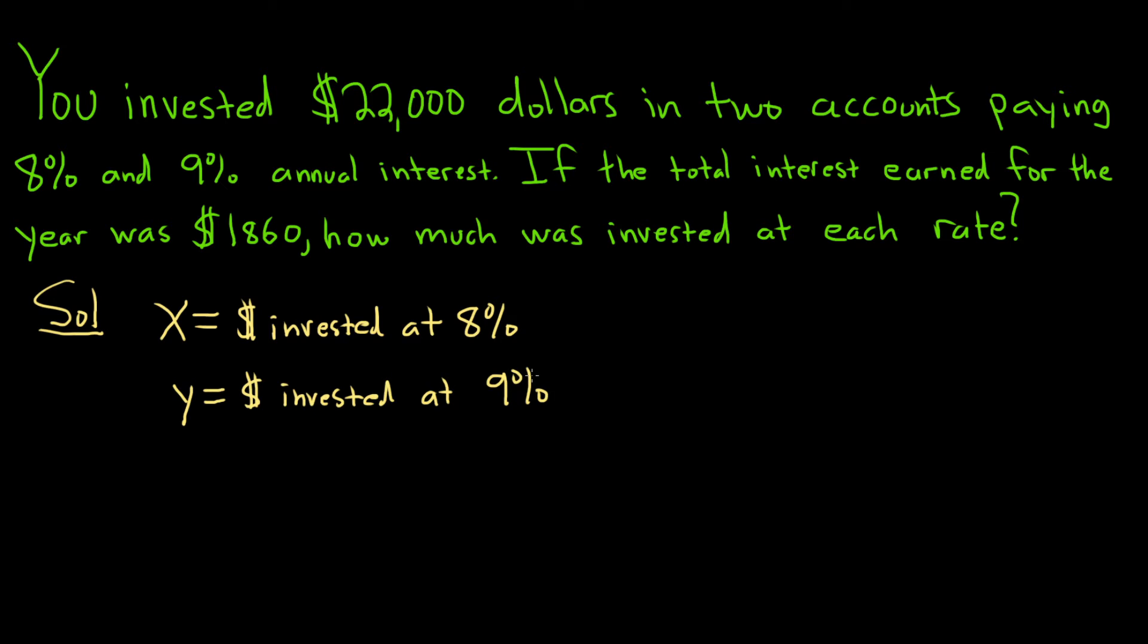Now we can create some equations with the given information. We invested $22,000 in two accounts. So that means the money invested at 8% plus the money invested at 9% equals $22,000. So we know that X plus Y equals $22,000.